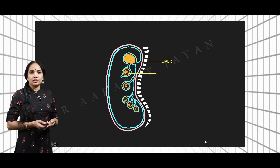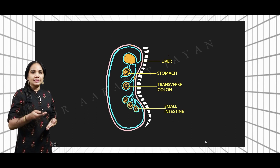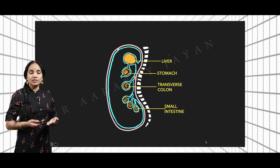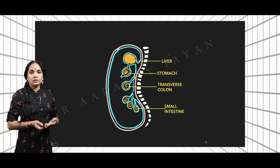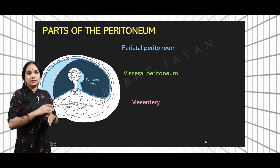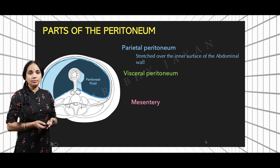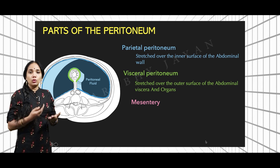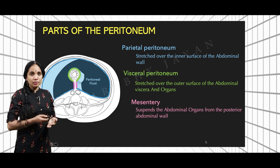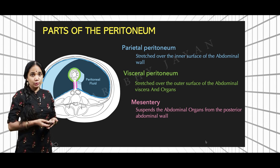Let us label these and go on to the parts of the peritoneum. We have the liver, the stomach, then the transverse colon and the small intestine. You can see the layers of the peritoneum covering these structures as well as extending from the rest of the peritoneum attached to the abdominal cavity. The peritoneum covering the inner side of the abdominal wall is called the parietal peritoneum. The part stretched over the outer surface of the abdominal viscera is called the visceral peritoneum.